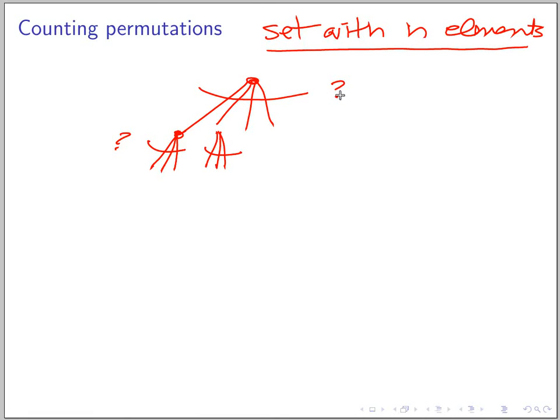The first step, since our set has elements a1, a2, up to an, these are the elements of the set. So the first step, since we have n elements, then we have n choices, right? We have n choices.